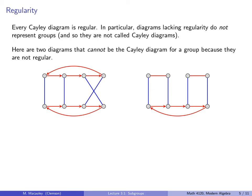Here are two diagrams that cannot be the Cayley diagram for a group because they are not regular. Let's check this. So here, red, blue equals blue, red. But if you do that here, red, blue does not equal blue, red. Here, red, blue, red equals blue, but that doesn't happen over here. Red, blue, red does not equal blue. And similarly, in this diagram, red, red is the identity, but down here, red, red is not the identity. There are a lot of other examples of where regularity fails.